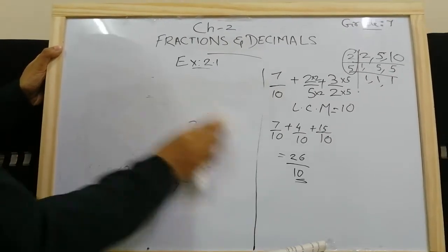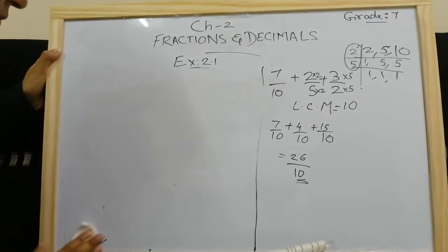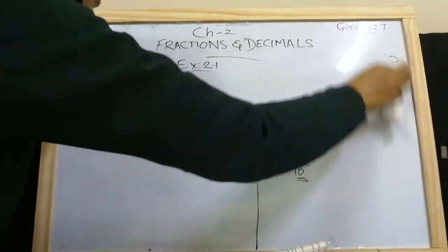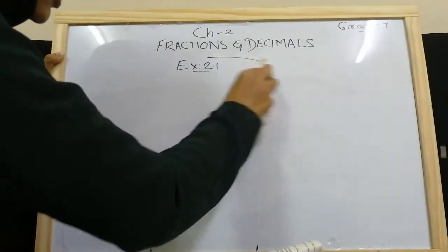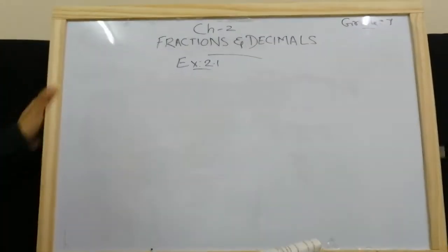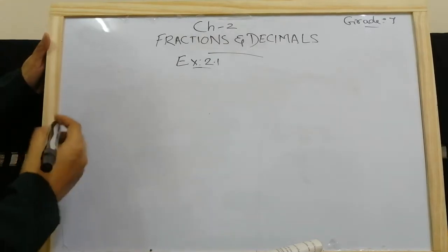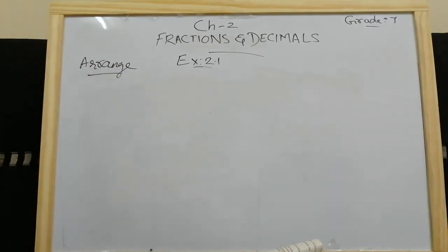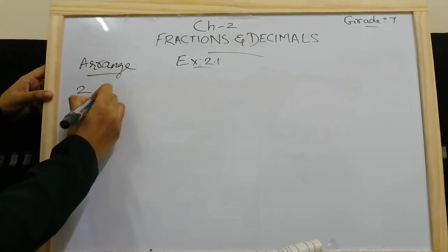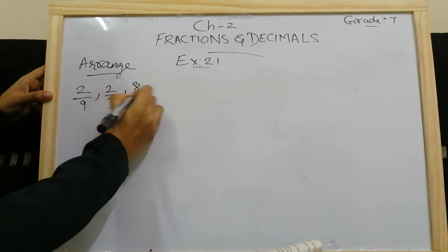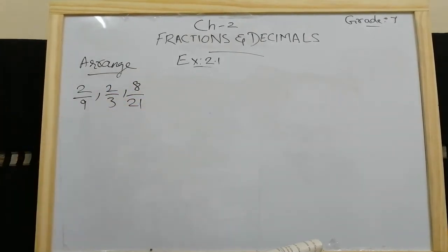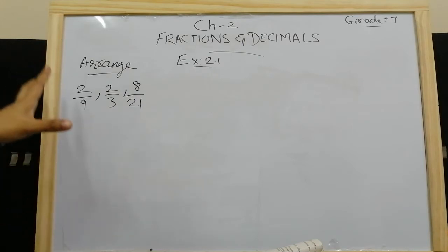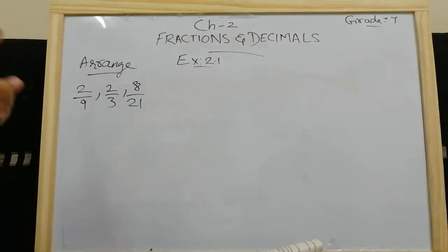Let's go to the next type of question: arrange in descending order. You can keep your textbooks open to check against the questions. Descending order means big to small. The first question is 2 by 9, 2 by 3, 8 by 21. To arrange from big to small, you will understand only once your denominators are the same — so we make denominators the same by taking the LCM.